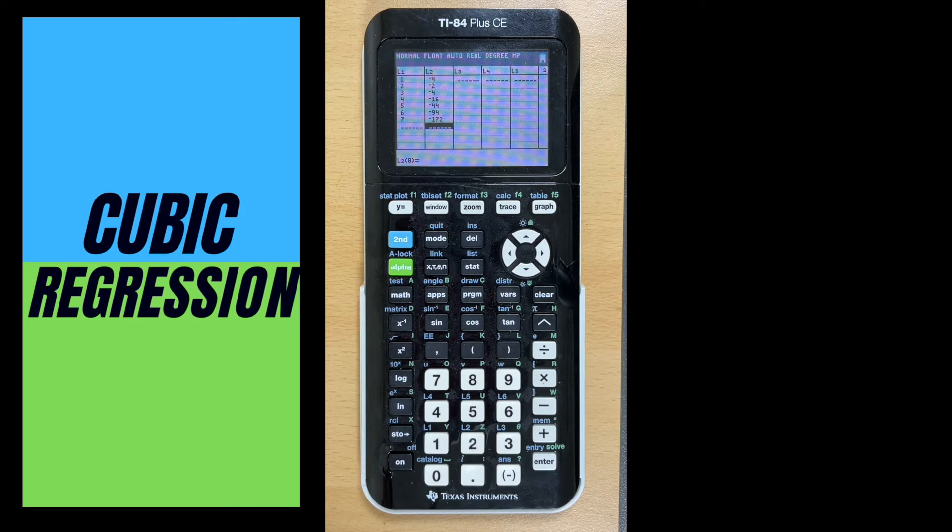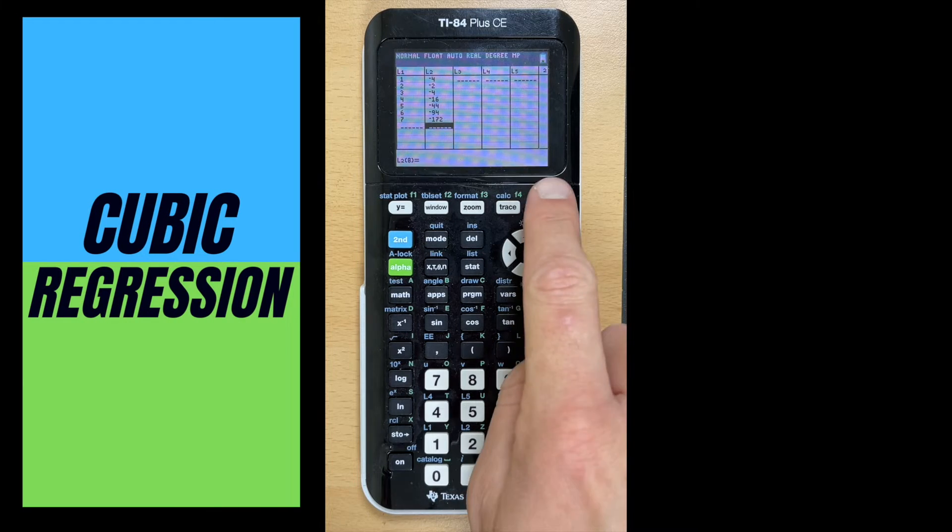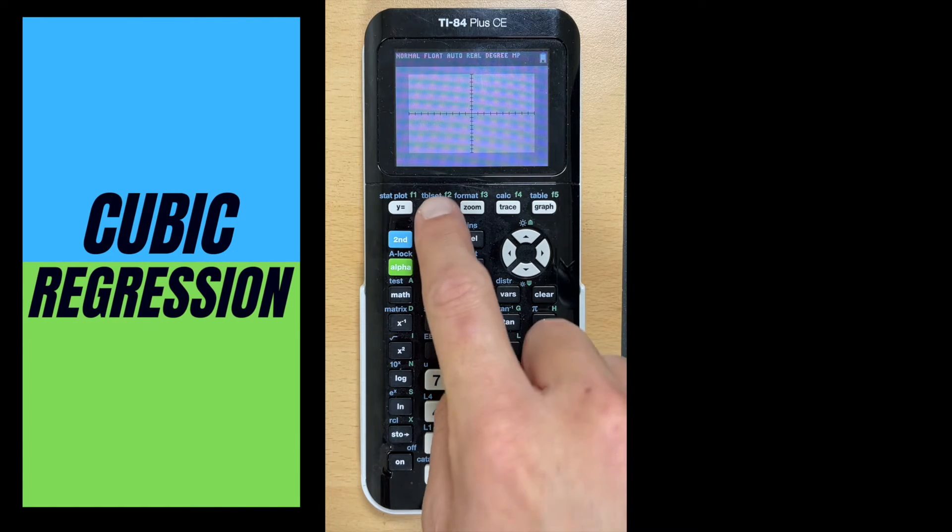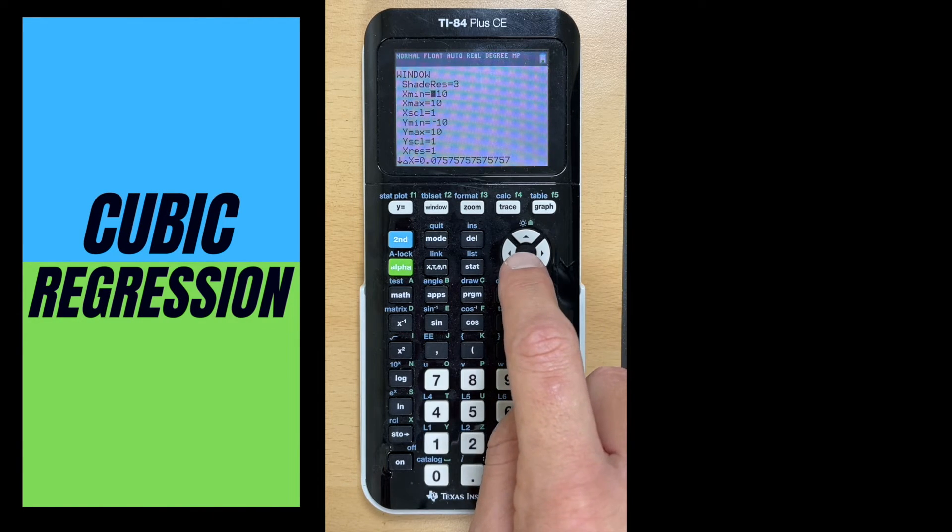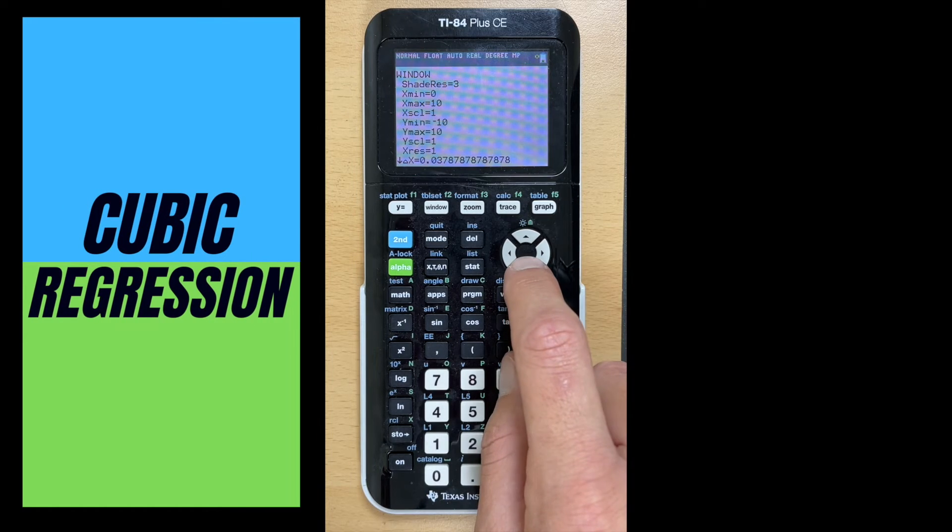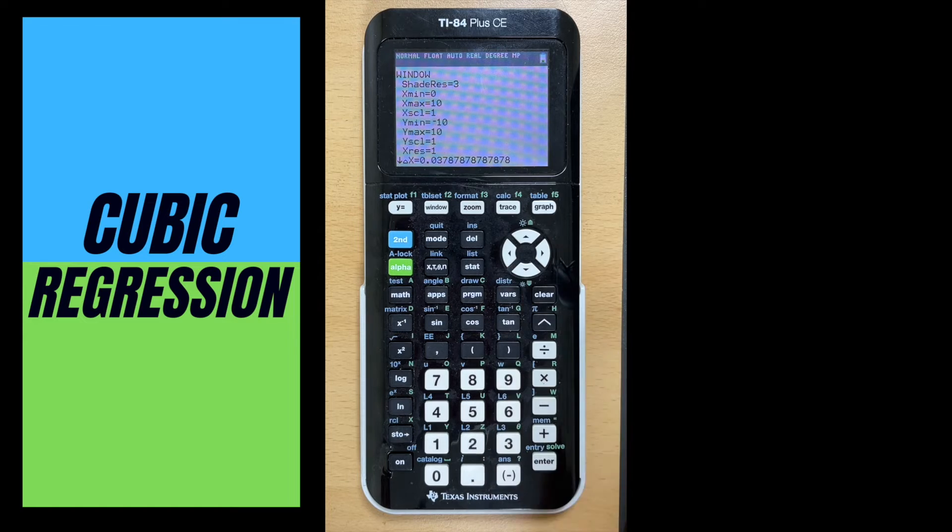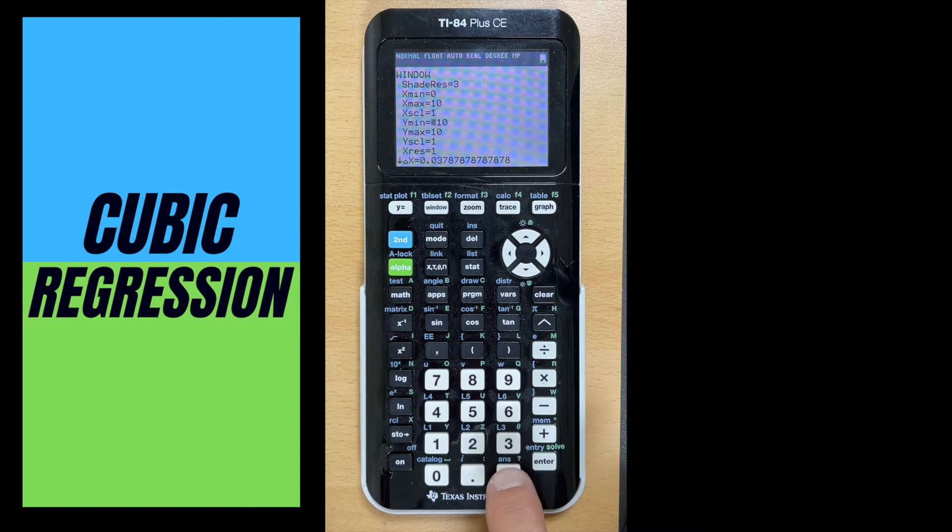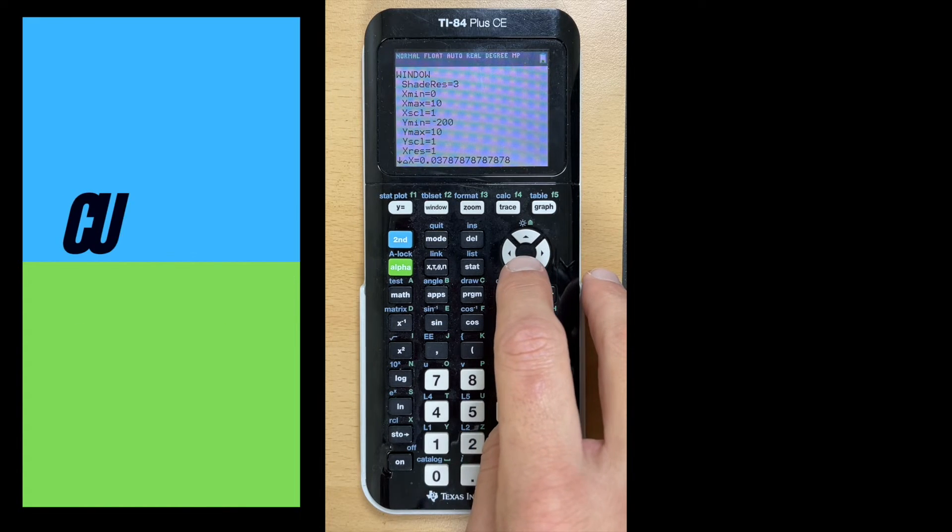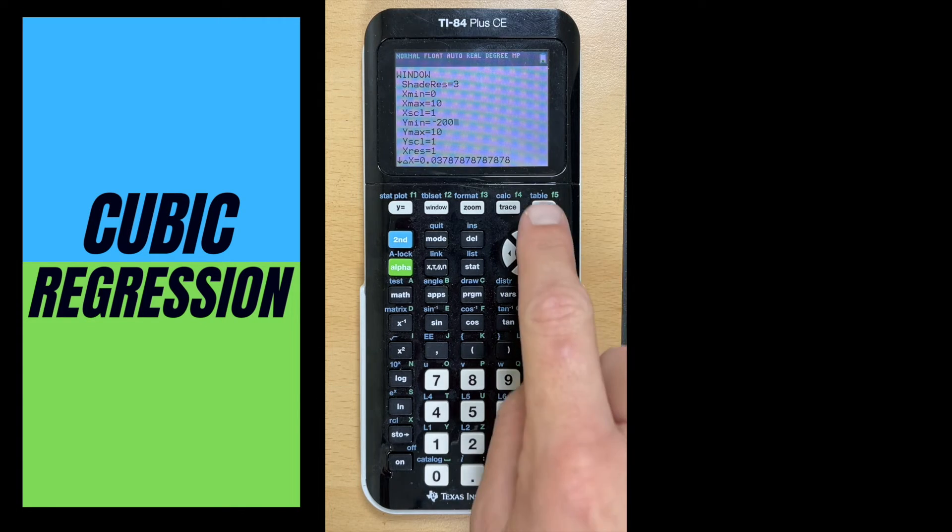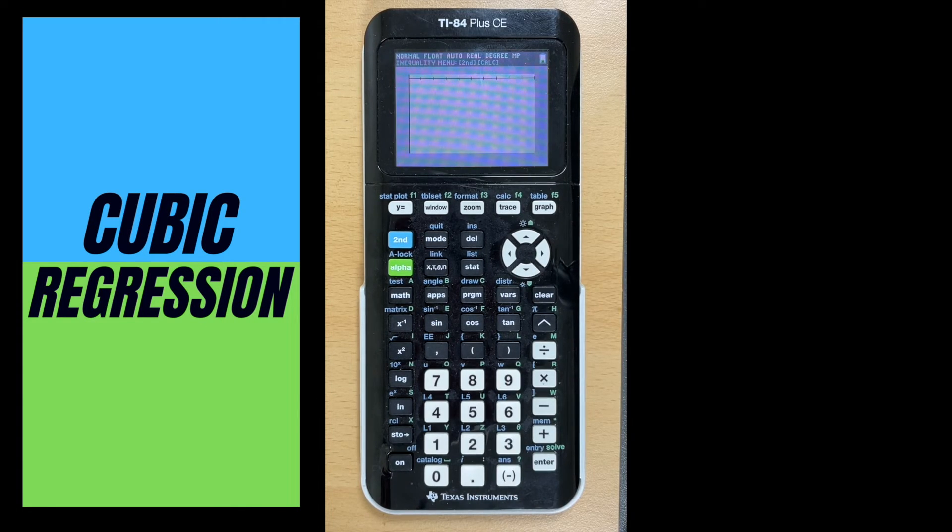Now I have my scatterplot essentially. I hit graph and nothing shows up, so we have to adjust a couple things here. First of all, we're going to go to our window. If we remember, my x values were 1 through 7, so I don't really need to see all the way to negative 10. We can leave x max at 10. For y min, I had a negative 172 in my data set, so let's change this to like negative 200, just so that we can see all the way down and have enough room. And then y max, let's just leave that at 10. We hit graph and we notice we still don't see anything.